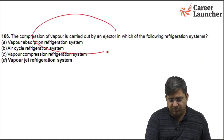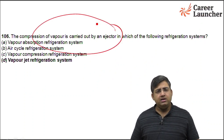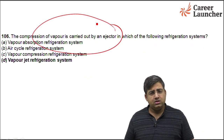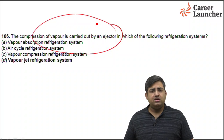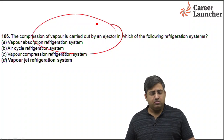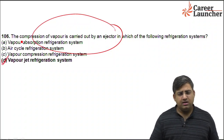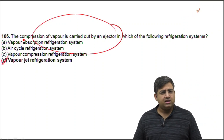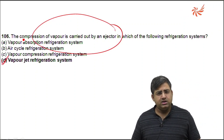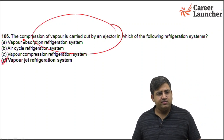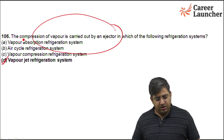The compression of vapour by an ejector is carried out in which system? It is used in the vapour jet type of compression system. The right answer is D. The ejector is used in a vapour jet compression system.